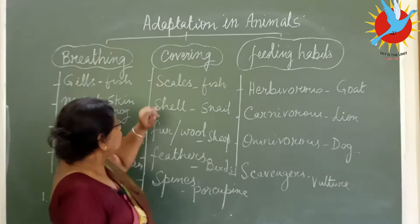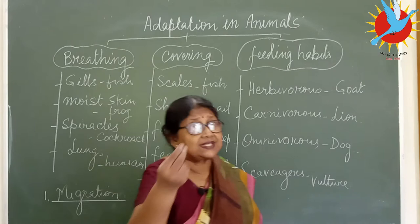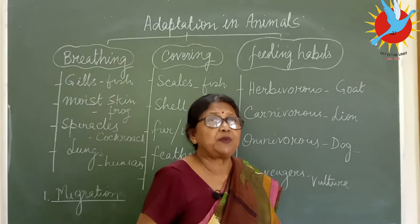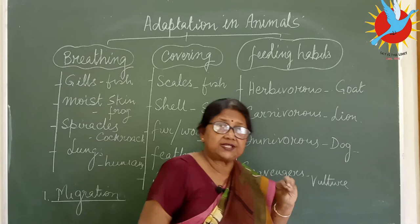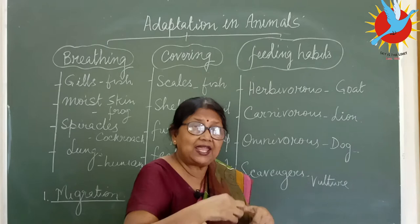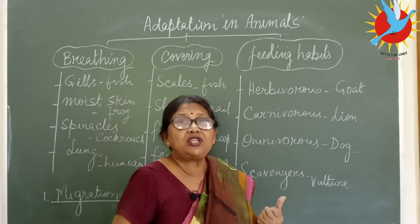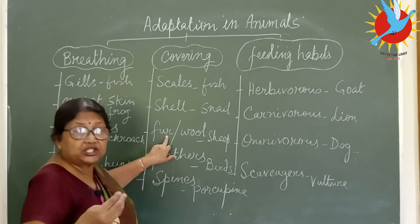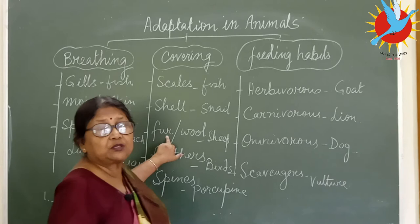Next we look at body covering. Scales are found on fish and also on snakes — very fine, thin, transparent scales protect the body surface. Shell is seen in snails — when scared or touched, the snail immediately withdraws and hides inside its shell, which acts as protective covering. Fur or wool is seen in sheep in hilly areas; because it is colder there, the fur and wool give protection.